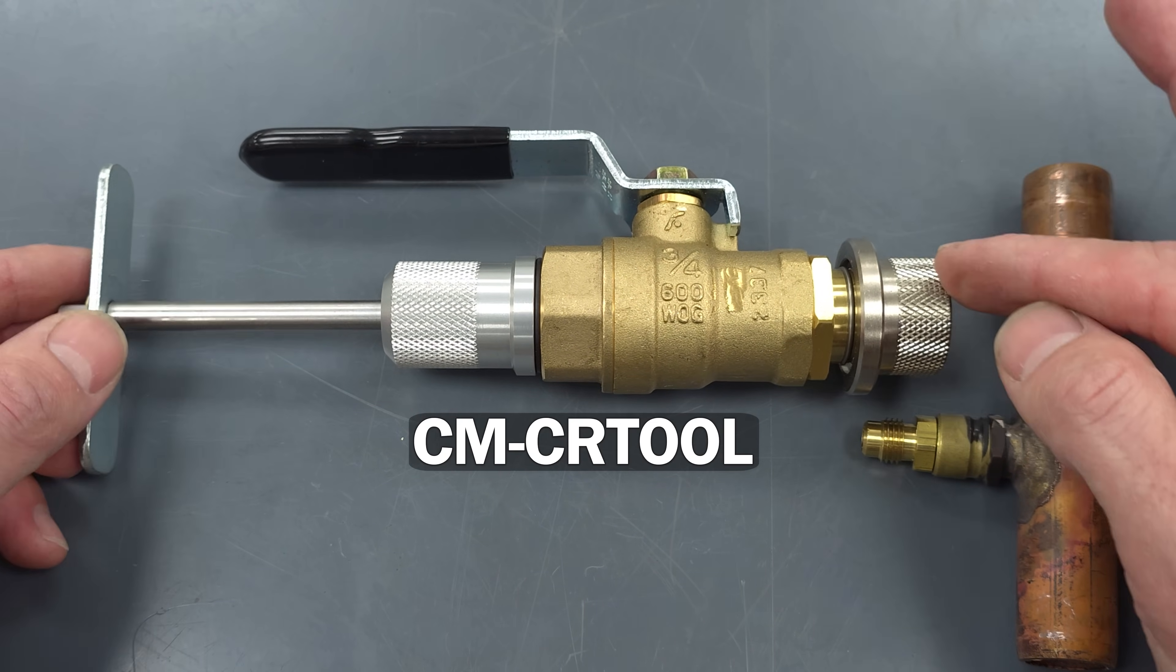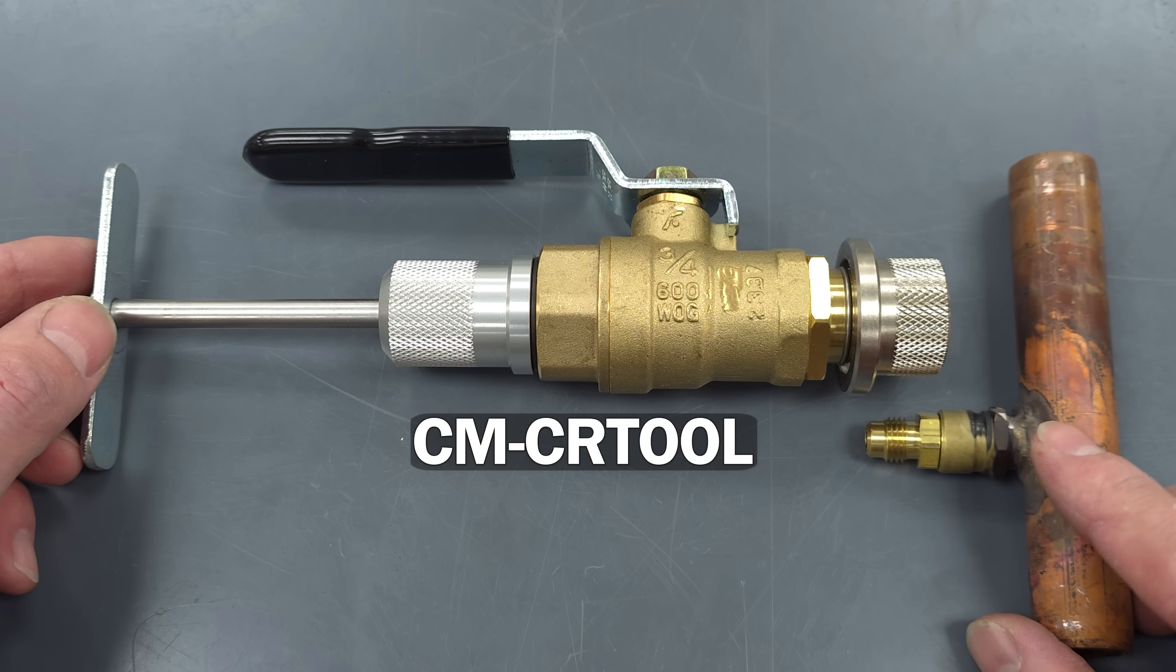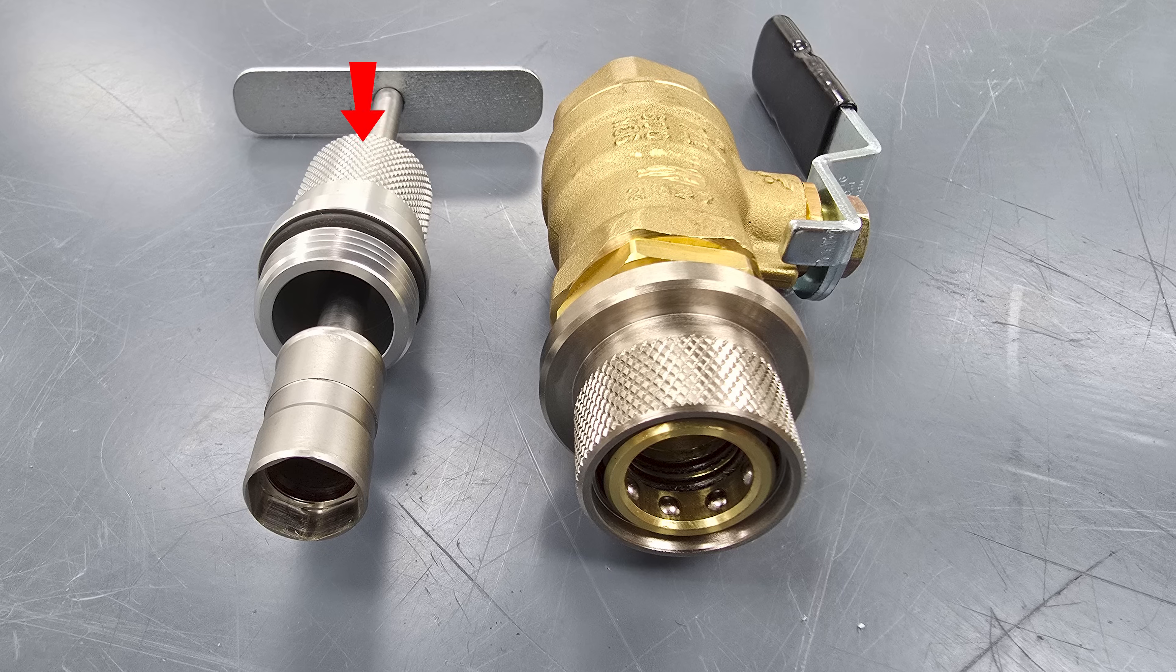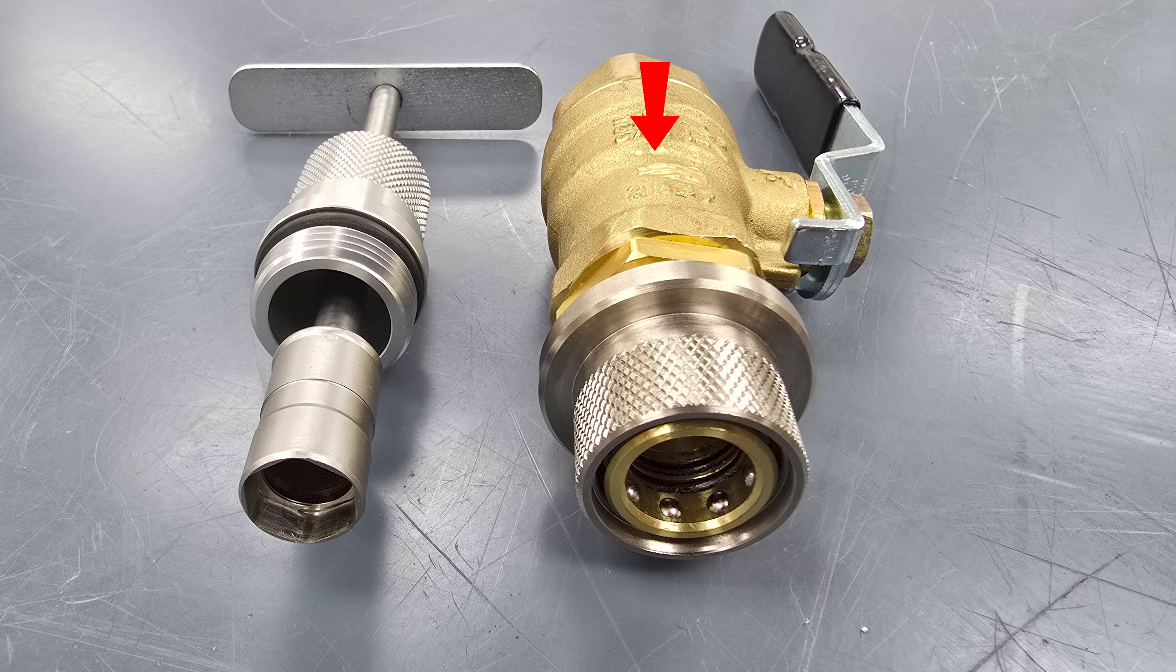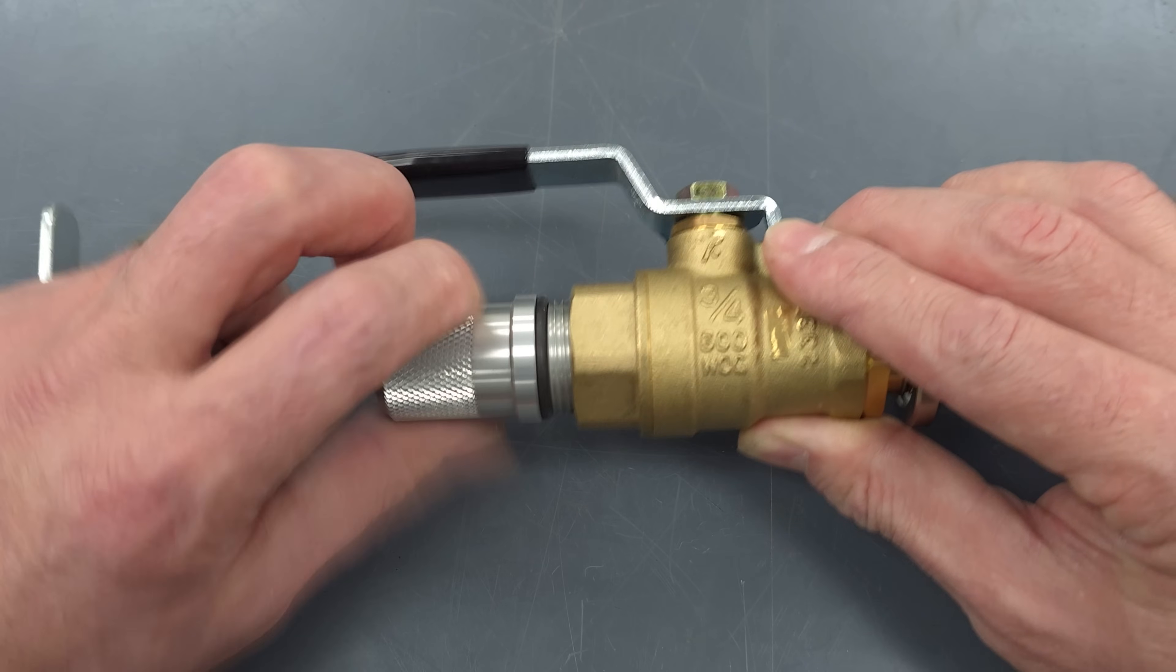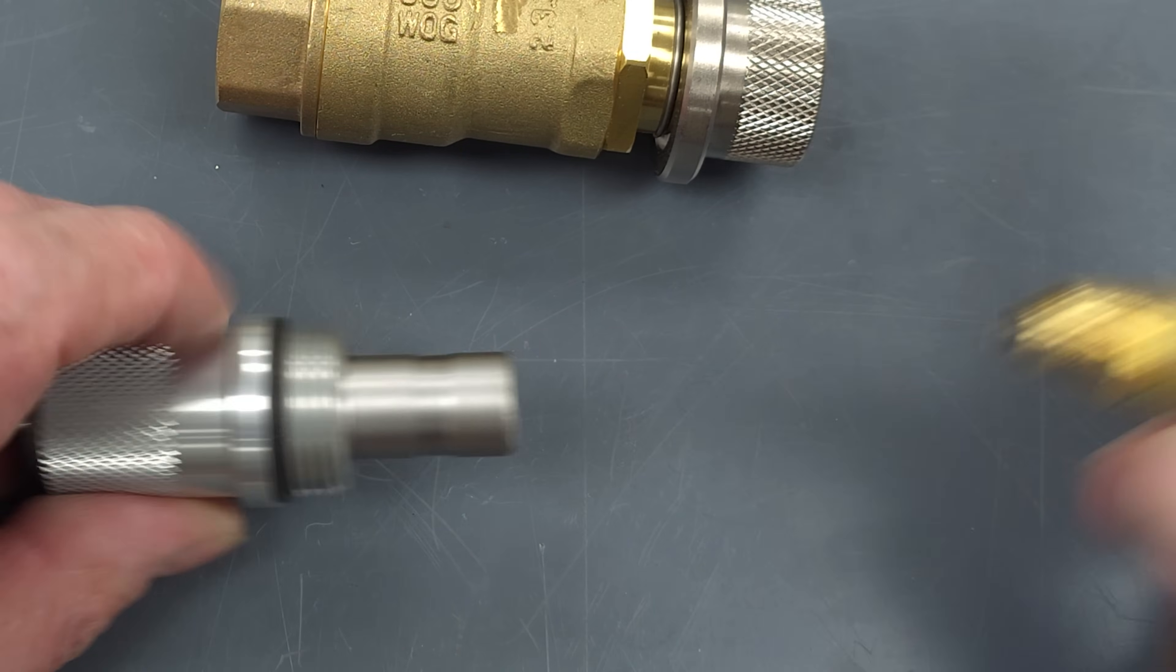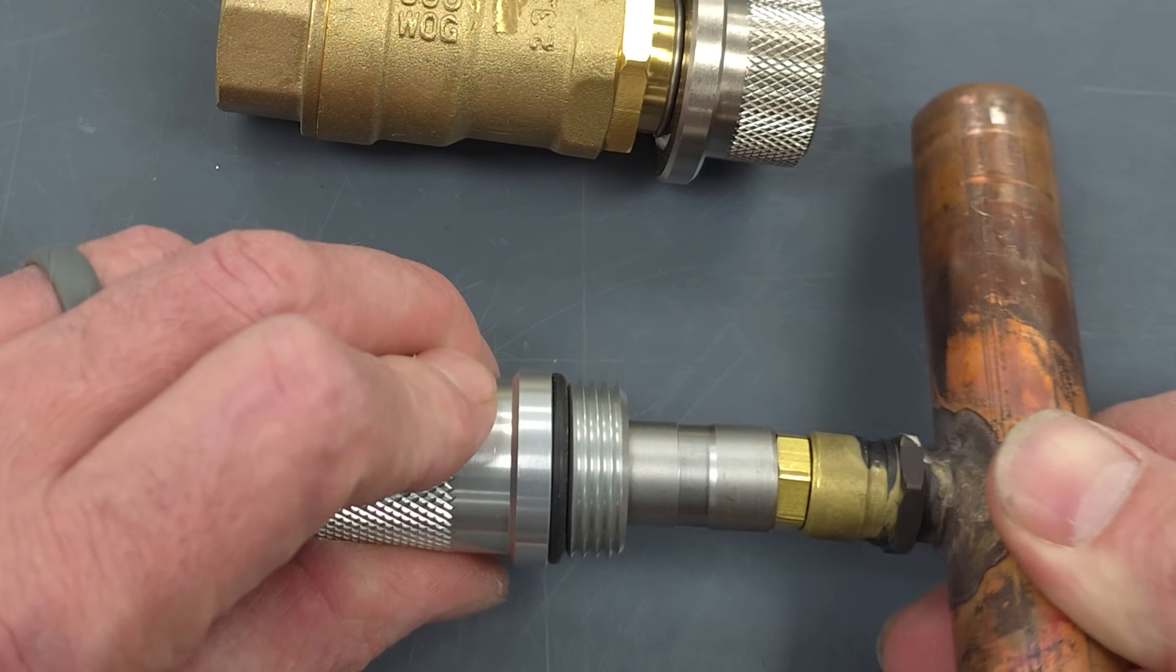In order to replace a Cormax valve assembly you're going to need this, it's the CM-CR tool, it's the valve core removal tool. And so it has two sections right here so it has this back section and the front section. And you can see right here it will be able to grab a hold of this on the inside.